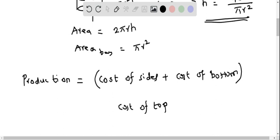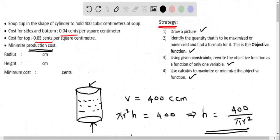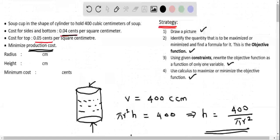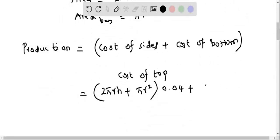The cost of constructing the sides is area times rate: 2 pi r h times 0.04. The cost of constructing the base is pi r squared times 0.04. The cost of constructing the top is pi r squared times 0.05, since the rate for the top is 0.05 cents per square meter.